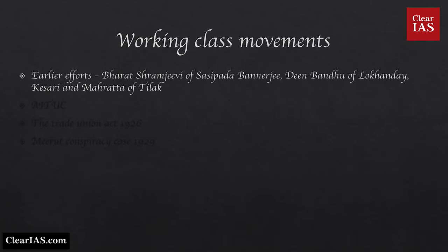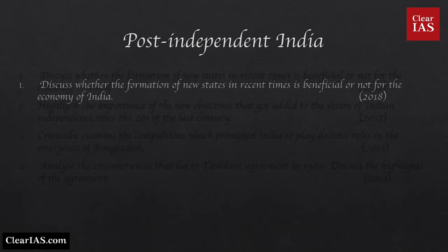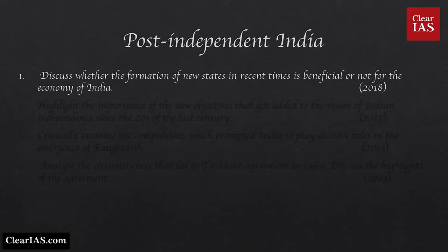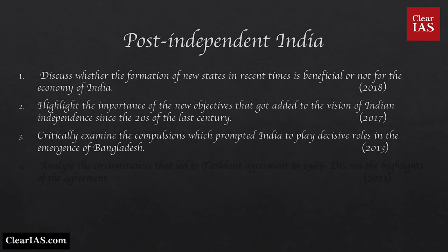You need to know about working class movements as well. Learn about earlier efforts for the progress of the working class through publications such as Parath Shramjeevi of Shashipada Banerjee, Deen Bandhu of Lokhande, and Kesari and Mahratta of Tilak, AITUC — its formation, leaders and activities — the Trade Union Act of 1926, and Meerut Conspiracy Case of 1929. Questions were also asked from post-independent Indian history — whether the formation of new states in recent times is beneficial or not for the economy of India; highlight the importance of new objectives added to the vision of Indian independence since the 1920s; critically examine the compulsions which prompted India to play a decisive role in the emergence of Bangladesh.